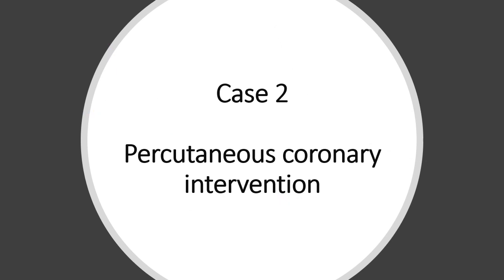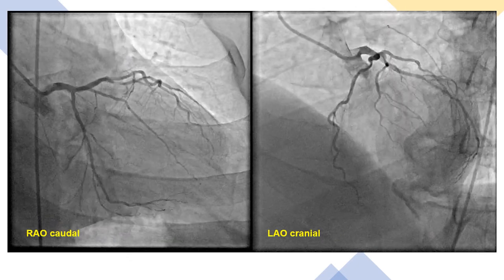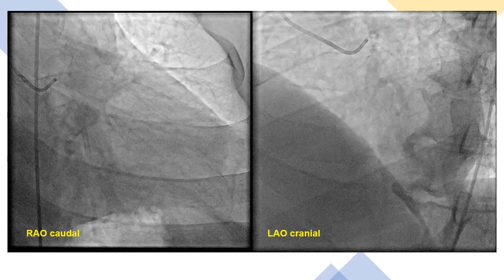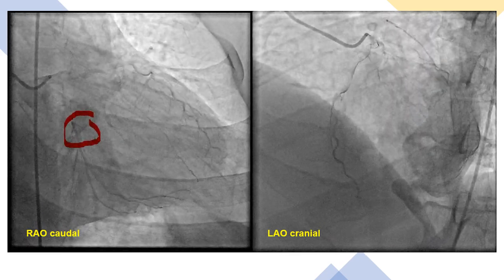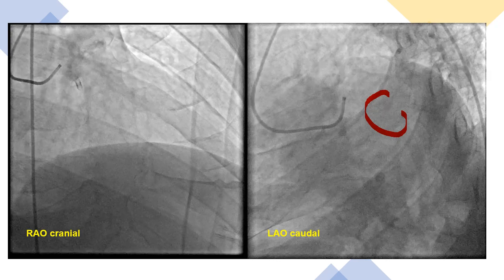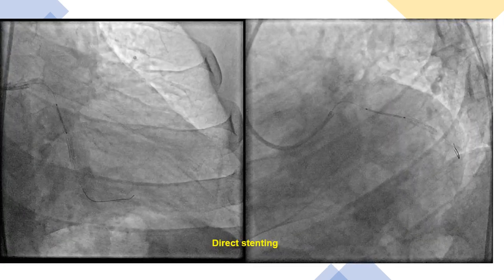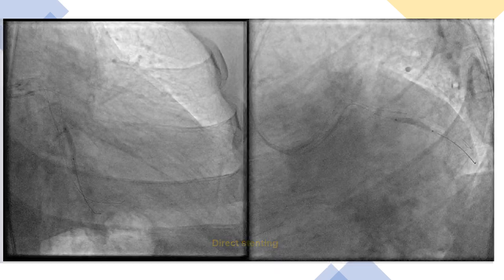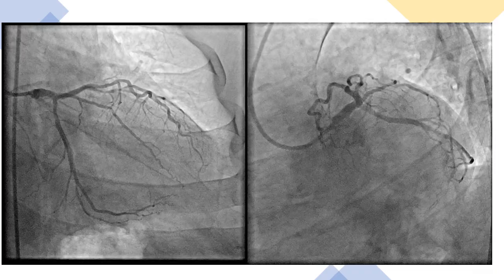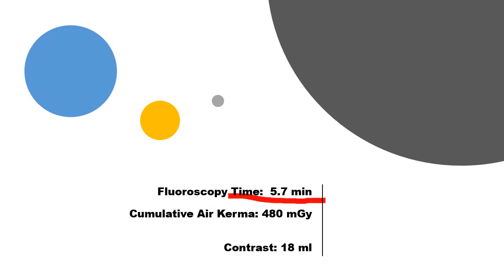Case number two is a case of percutaneous coronary intervention. Our initial simultaneous views on RAO caudal and LAO cranial show a circumflex lesion proximal to a prior stent. This lesion is also seen in the LAO caudal view. We decided on direct stenting, deployed the stent, and had good final angiographic results. Fluoroscopy time in this case was only 5.7 minutes, and we used 18 cc's of contrast for the whole case.